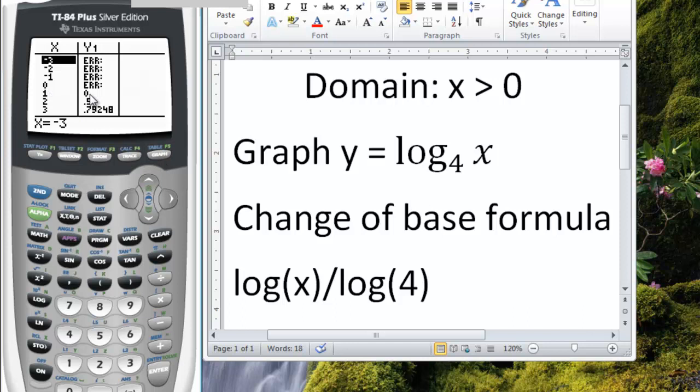Our domain is still the same, because you just take your argument, set that greater than 0. So you still have to start with values larger than 0 when you graph this. And then you can always scroll in your table to find other values.